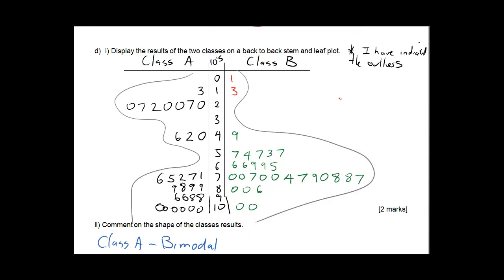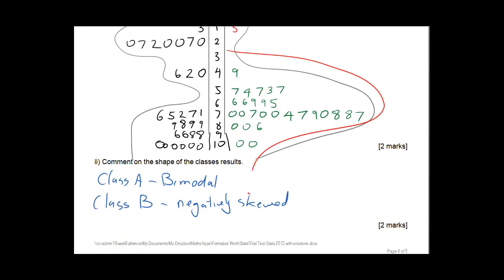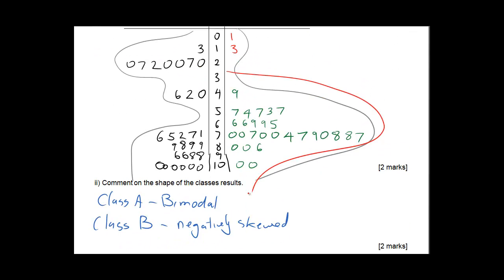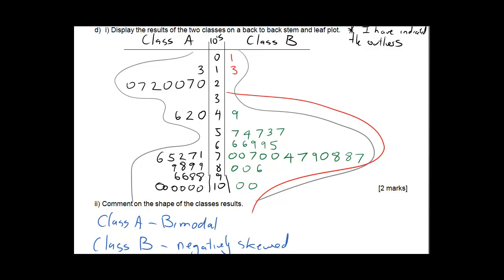Then draw back-to-back stem and leaf. Notice I've just left the 1 and 3 there just to see what it's like. If I wasn't taking that into account, my bell-shaped curve is going to look like this. And you can see that these are the numbers lying in there so it's actually not too bad. When it talks about the shape, class A is bimodal because it's got these two peaks here, two modes. And class B is slightly negatively skewed. If you take into account the outlier still being there, it's quite negatively skewed. Otherwise it's just been pushed up.